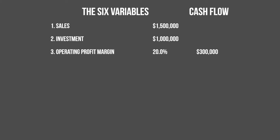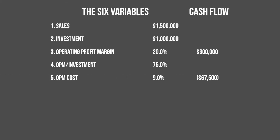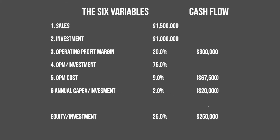The company investment was funded 75% with OPM costing 9% annually, and 25% with investor capital. The company requires average annual added investments of 2% of the original one million dollar investment, or $20,000 a year.